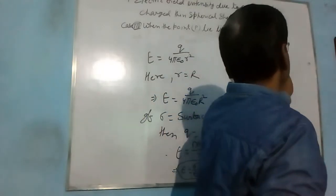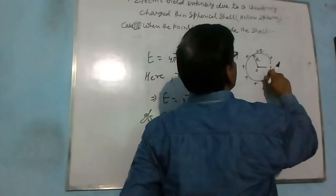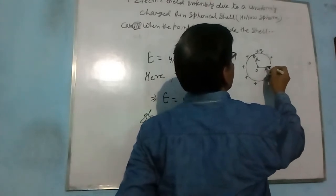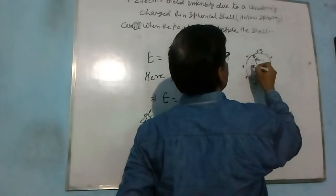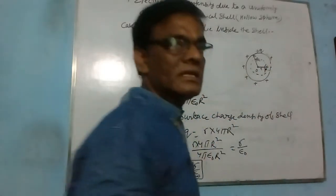In this case, suppose this is the point P and we draw a spherical surface, that is Gaussian surface.